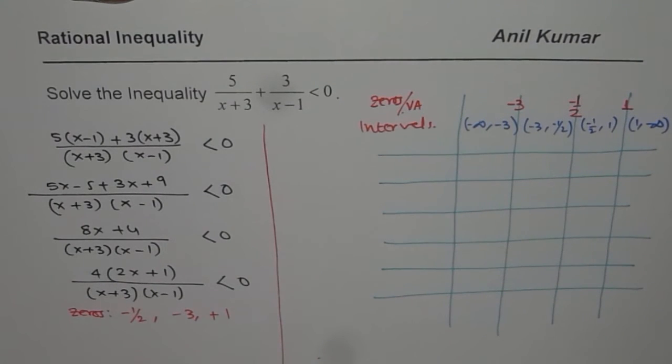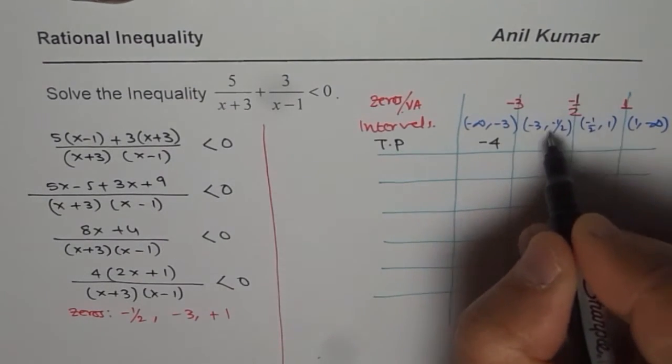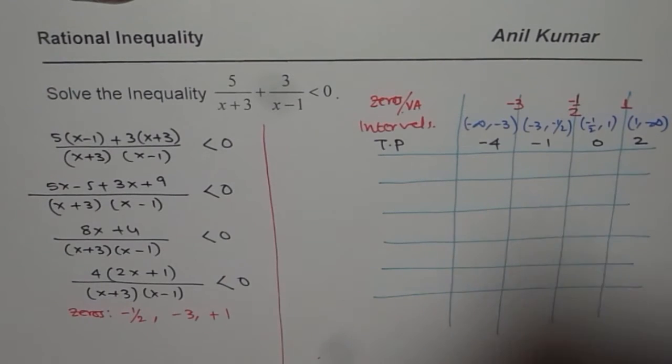In each interval, we should take test points. So let us take test points now. These t dot p is test points for me. Minus 4, between then minus 1 will be good, 0 and 2.